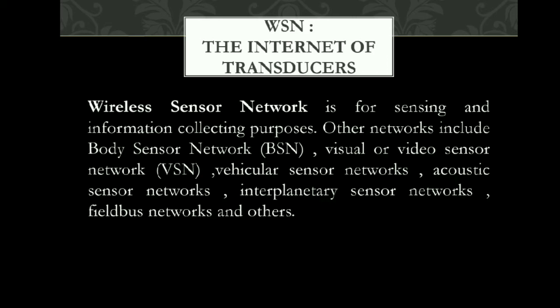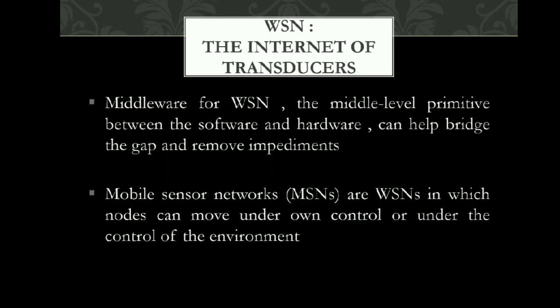The next pillar is WSN — wireless sensor networks — the Internet of transducers, used for sensing and information collecting purposes. Other network types include BSN, visual or video sensor networks, vehicular sensor networks, acoustic sensor networks, interplanetary sensor networks, and field bus networks. It consists of spatially distributed autonomous sensors to monitor physical or environmental conditions.